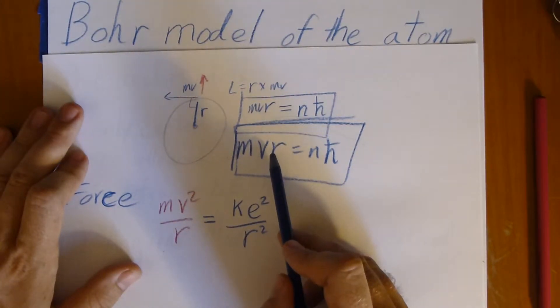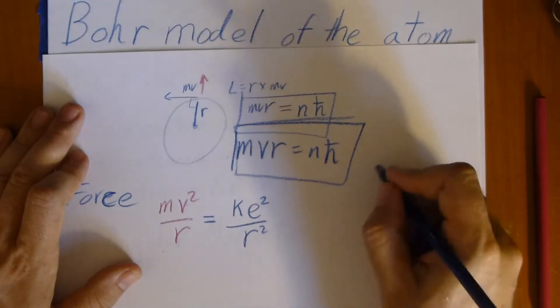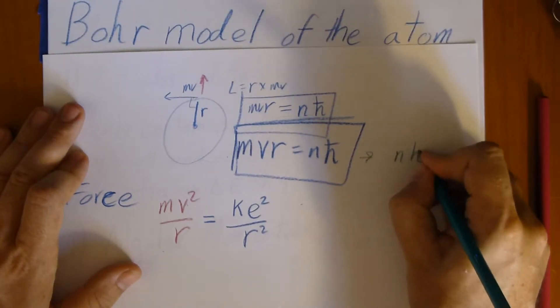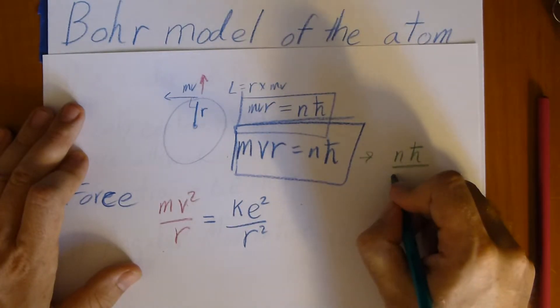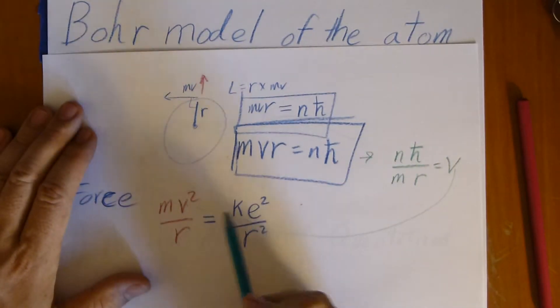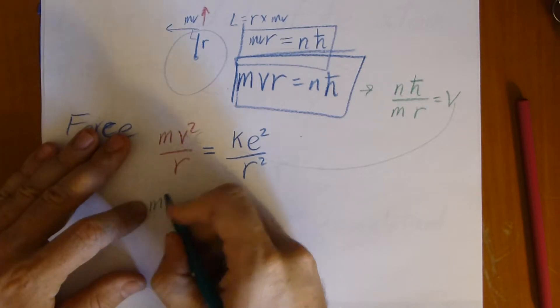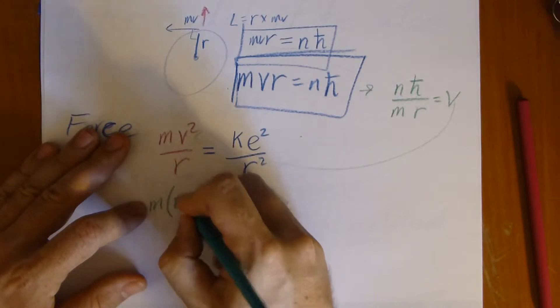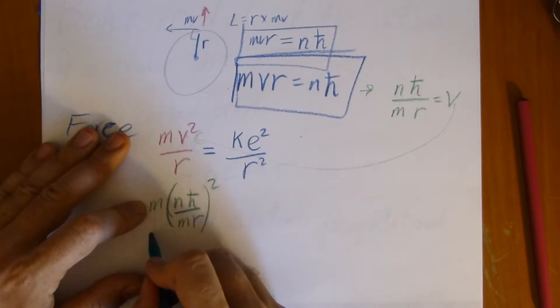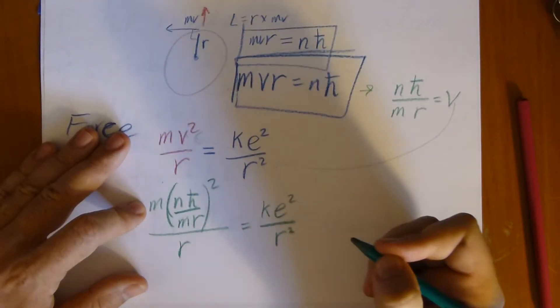So, I'm going to solve this for, let's see, solve this for velocity, plug it into here. So I'll take this, get N H bar over MR equals V. Plug this into here, we get MV squared, which is now N H bar over MR squared over R equals K E squared over R squared.